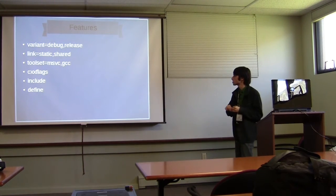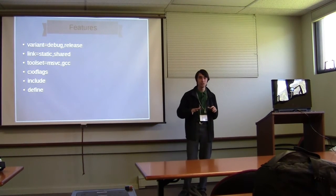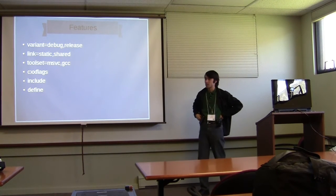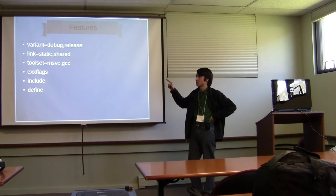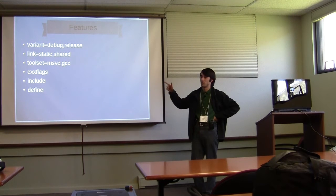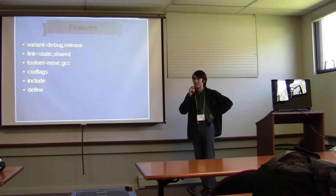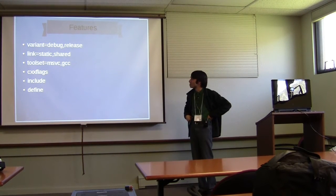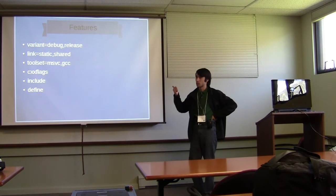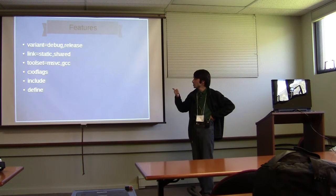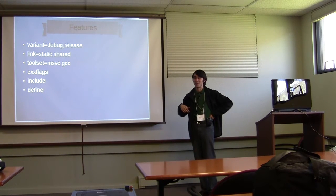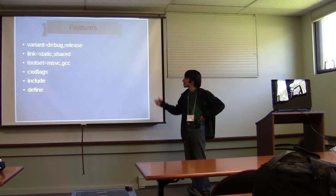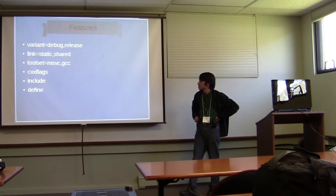Now I want to talk about features and properties. Features are generally used to control everything in the build process. Debug and release are actually associated with a feature known as variant — if you say 'debug' on the command line or 'variant=debug', they're exactly the same thing. It's so common we created a short alias for it. Features also control the tool set — that's how we build with 15 different compilers in the same B2 invocation. Then there are others like cxxflags, include, and define.